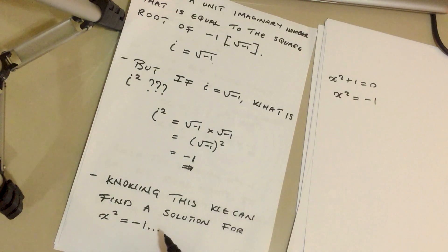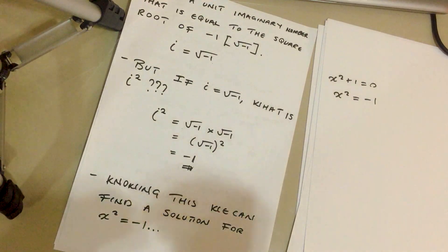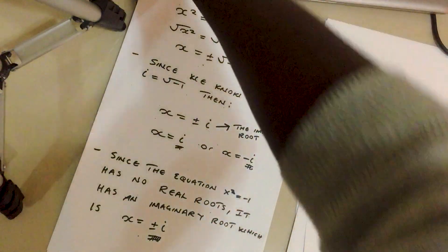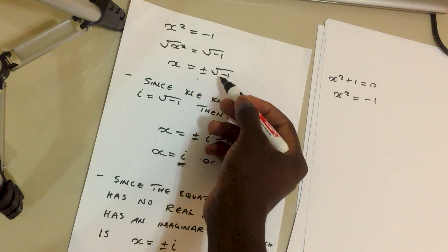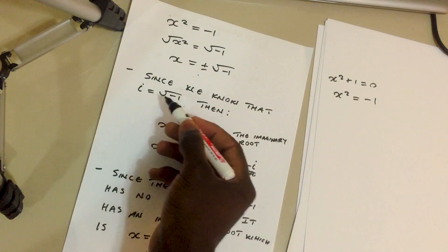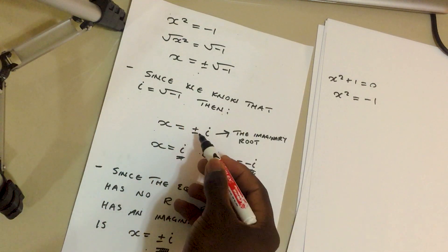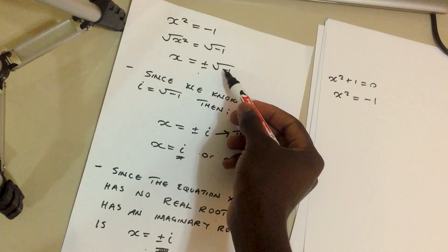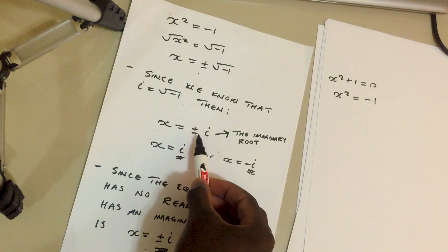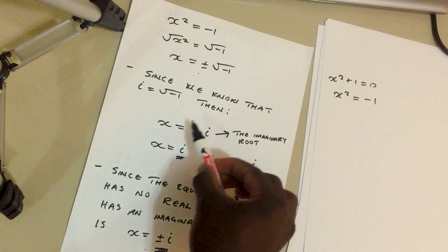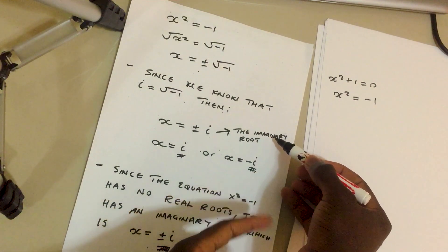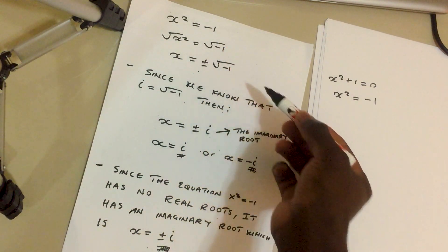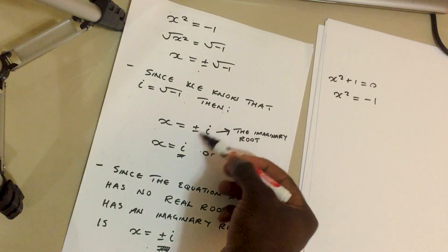Knowing this, we can now find a solution for x squared equals negative one. We had x equals plus or minus the square root of negative one. Since i equals the square root of negative one, x equals plus or minus i — we've simply substituted the square root of negative one with i. So the answer is plus or minus i. This is the imaginary solution in the complex number system, and it is called the imaginary root. This quadratic function has no real roots, but it has this imaginary root.